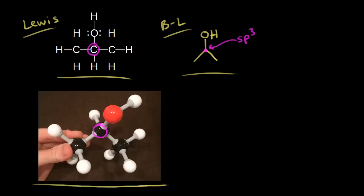If you look at that carbon on the picture, you can see that this bond and this bond are in the same plane. So if you had a flat sheet of paper, you could say those bonds are in the same plane. A line represents a bond in the plane of the paper, so we draw those two bonds in the plane of the paper.